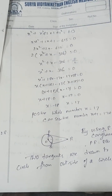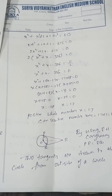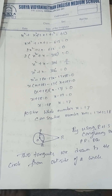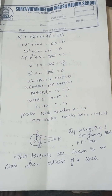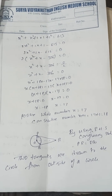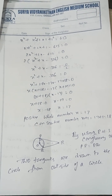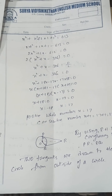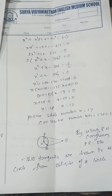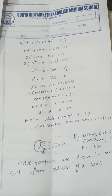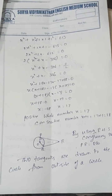How many tangents can you draw from an external point? Two tangents. R is the external point; PR and PQ are tangents. At points P and Q the angles are 90°. By RHS congruence rule, the two tangents drawn from an external point are equal.